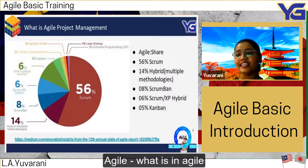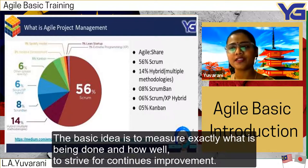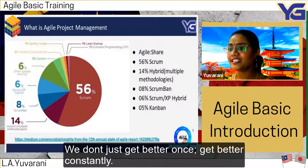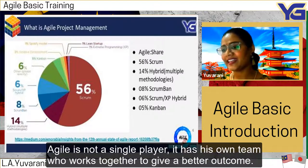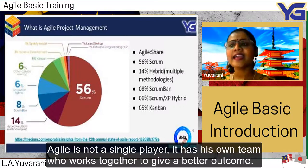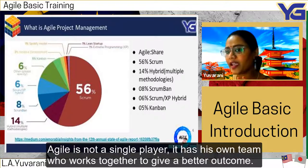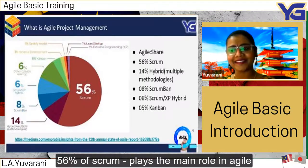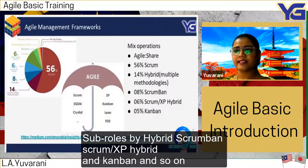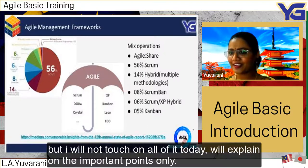The basic idea of agile is to measure exactly what is being done and how well, and to strive for continuous improvement. Using agile, you don't just get better once — you get better constantly. As we can see in this pie chart, agile is not a single player. Its main framework is scrum at 56 percent, with sub-roles including hybrid scrumban, scrum XP hybrid, kanban, and so on.